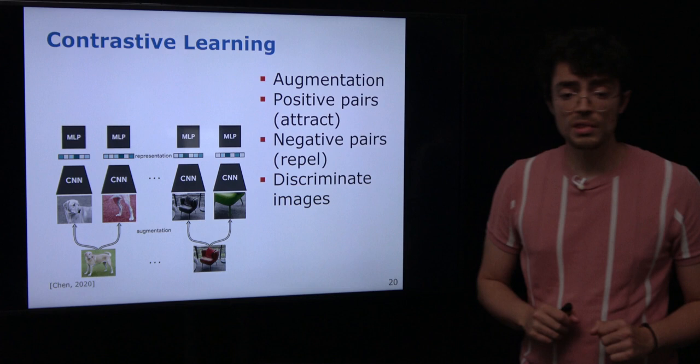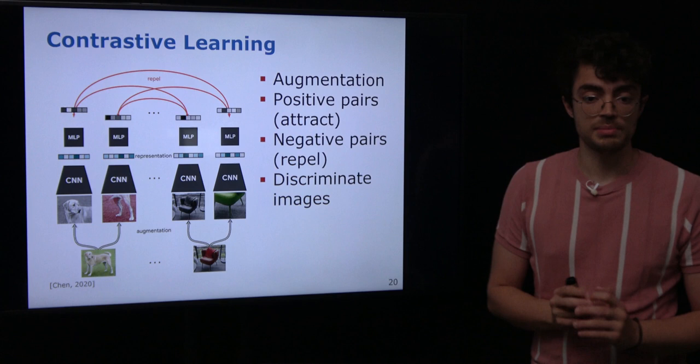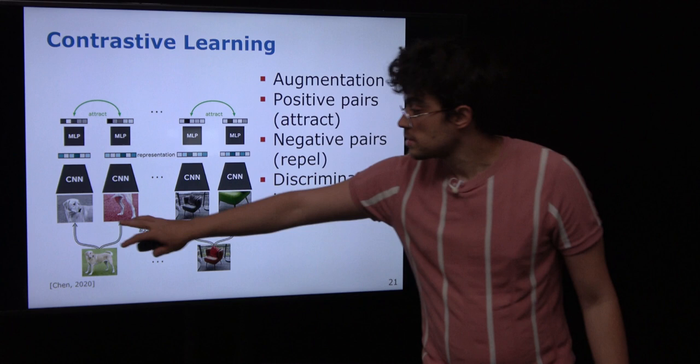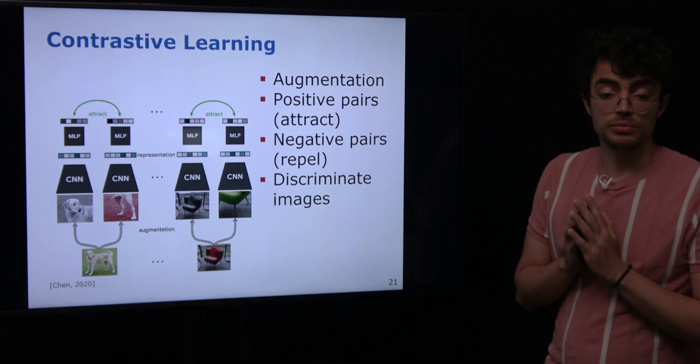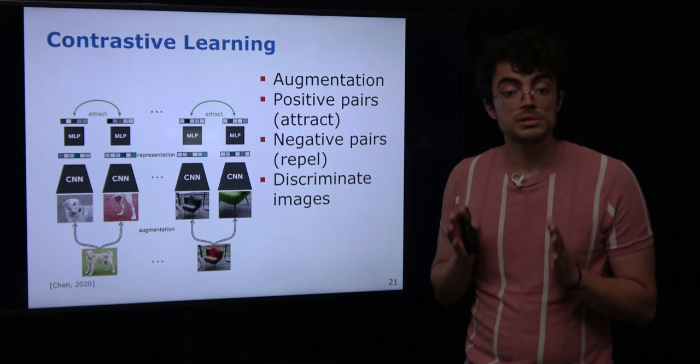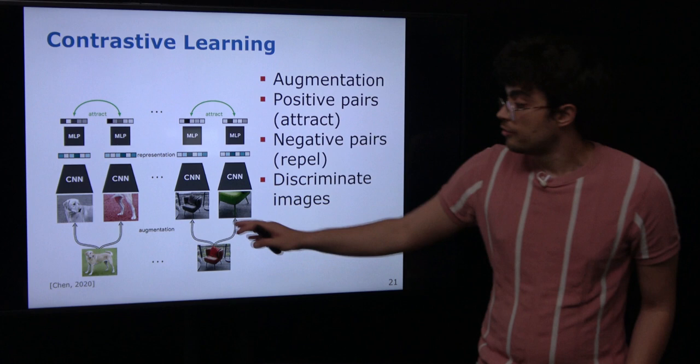How does contrastive learning work? The idea is that you have a source image, and from it you apply several data augmentations to have two different versions of the same image. You know they are coming from the same source. You use your model to extract features from these generated images, and for images coming from the same source you want to maximize the similarity between them — these are the positive pairs. The representation learned by the network for these images should be as similar as possible.